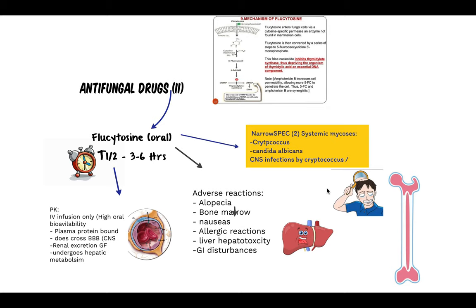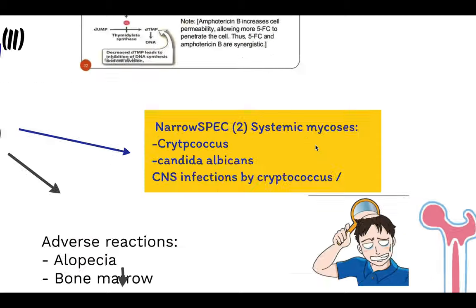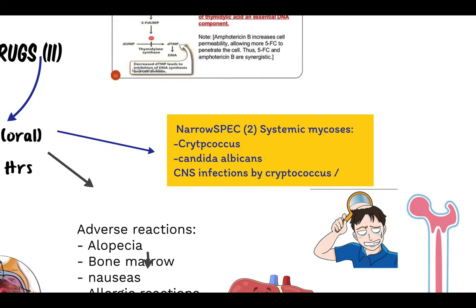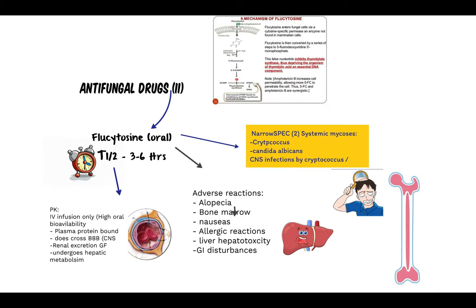Bone marrow depression can occur, leading to bone conditions, osteoporosis, and anemia. Allergic reactions, GI disturbances, and liver hepatotoxicity are also adverse reactions. Flucytosine has a narrow spectrum covering only two species — Cryptococcus and Candida albicans — and is usually used in CNS cryptococcosis. It can be used in combination with Amphotericin B or an azole. The main things to remember are bone marrow depression, alopecia, and liver hepatotoxicity.